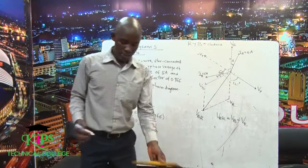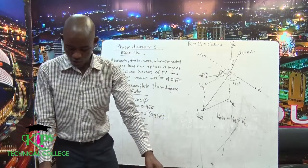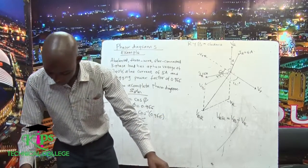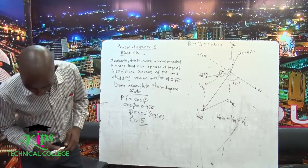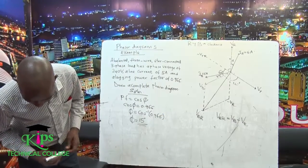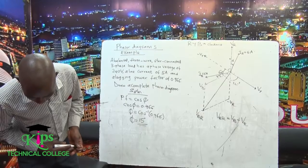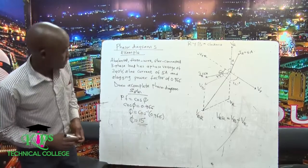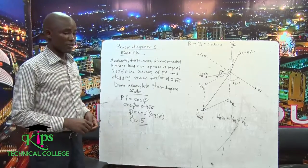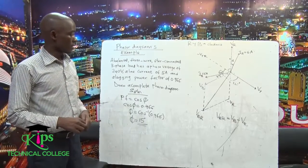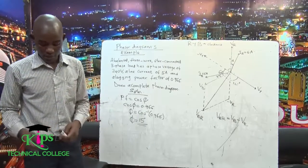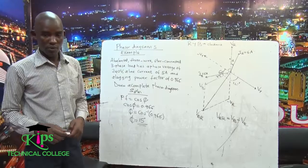That is how you get the line voltage from the phasor diagram. We will stop there for now and continue until next time. Thank you.